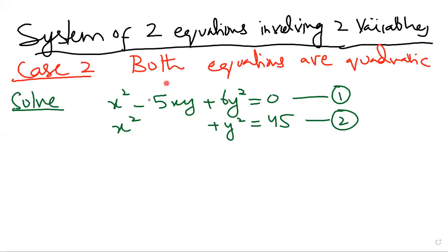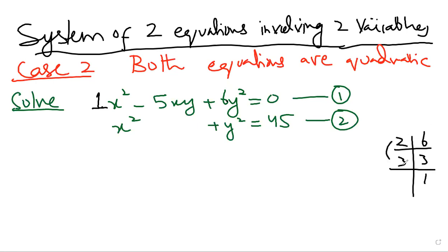What technique should we follow here? Looking at equation 1 — which has x-squared, an xy term, and y-squared — we can apply middle term breaking. We will apply middle term breaking to equation number 1. The product is 1 times 6 = 6, which factors as 2 times 3, and 2 plus 3 gives us the middle term. So the middle term breaking factors are 2 and 3.